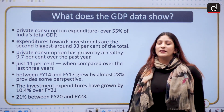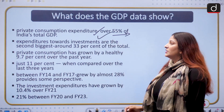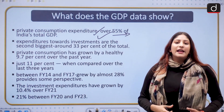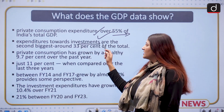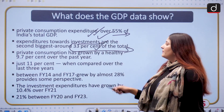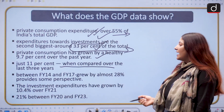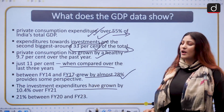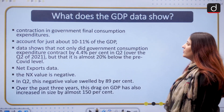Now let's talk about GDP through private consumption expenditure — the most important component when calculating GDP through the expenditure method. It comprises over 55% of India's total GDP. If private consumption expenditure is not healthy, investment will also get impacted — if consumers do not want to consume, why would companies want to invest? Expenditure towards investment is the second biggest component, comprising around 33% of the total. Private consumption has grown by a healthy 9.7% over the past year, though just 11% over the last three years. Between FY14 and FY17, private consumption expenditure grew by almost 28%. Investment expenditure has also grown by 10.4% over FY21, and 21% between FY20 and FY2022-23.